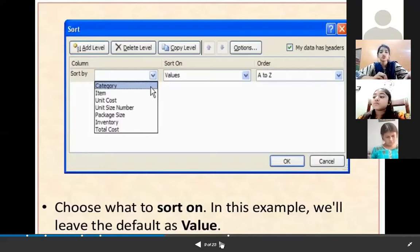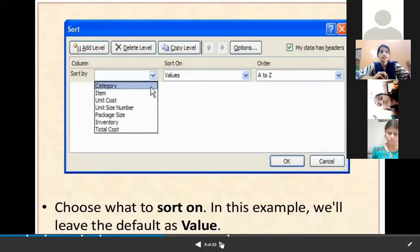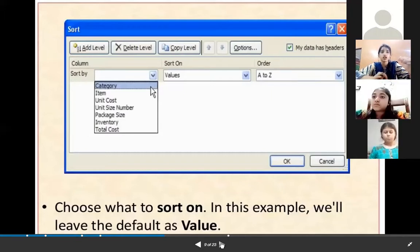Choose what to sort on. In this example, we will leave the default as value. In the first column Sort By, you need to select the category, then whatever you need to sort, and then order—A to Z, Z to A, smallest to largest, or largest to smallest.